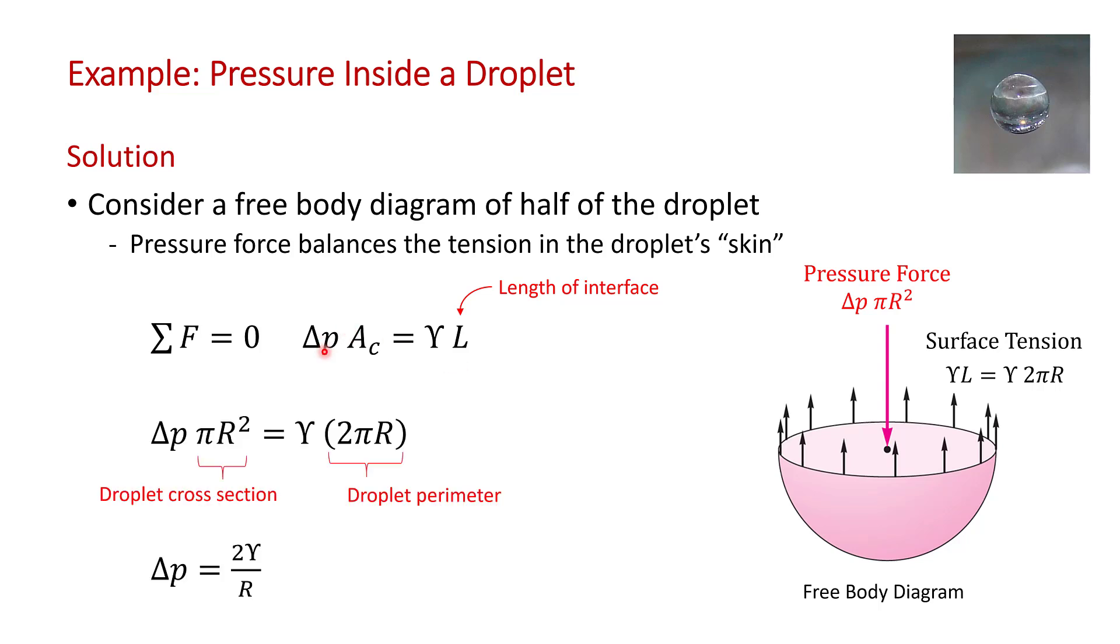As we discussed, the pressure force acts over the cross-sectional area of the droplet, πr² here. And the surface tension force, which is force per unit length, acts over the droplet perimeter, which is 2πr.